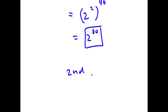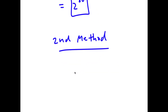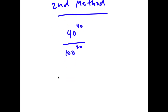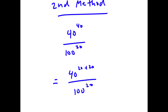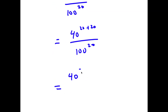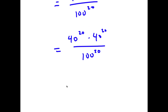Now I have a second method of solving this problem. I start again with 40 to the power of 40 over 100 to the power of 20. This time I'm going to rewrite 40 to the power of 40 as 40 to the power of 20 plus 20 over 100 to the power of 20. This is the same thing as 40 to the power of 20 times 40 to the power of 20 over 100 to the power of 20.